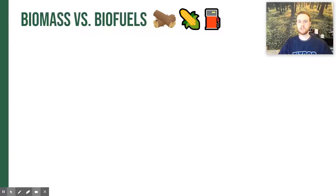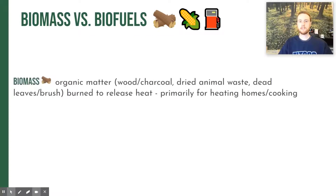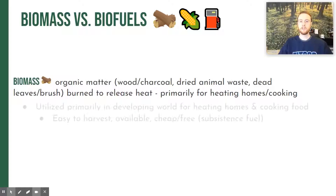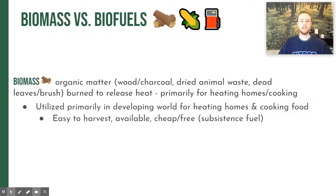The first thing we'll talk about today is biomass versus biofuels. Biomass is basically any organic matter — this could be wood, charcoal, dried animal waste, or dry brush or grass that is going to be burned. It's usually used to heat a home or to cook food. This is primarily used in developing nations because it's easy to harvest and often free or very inexpensive, used as a subsistence fuel.